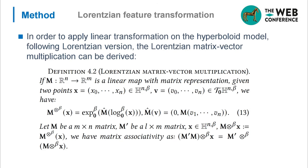In order to apply linear transformation on the hyperboloid model, following Lorentzian version, the Lorentzian matrix-vector multiplication can be derived. In Lorentzian matrix-vector multiplication, we first map the features into tangent space and conduct Euclidean matrix-vector multiplication in the tangent space. Please note that we only conduct the Euclidean matrix-vector multiplication on the last n coordinates in the tangent space. That ensures the features satisfy the constraint of tangent space.